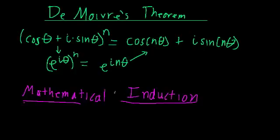You use mathematical induction when you have an expression with some index — in this case our index is n — and you want to prove that this works for any integer value of n. That's what you use mathematical induction for: essentially showing that an expression holds for any integer value of n. And this has two steps.